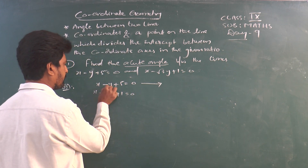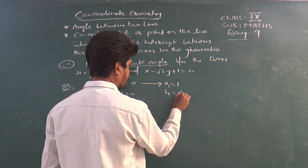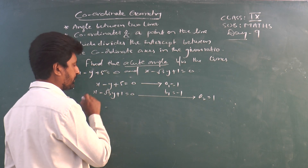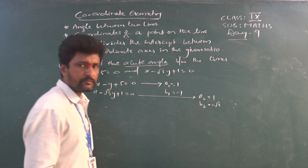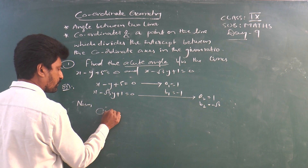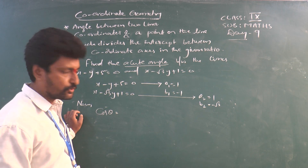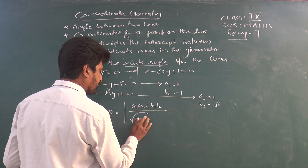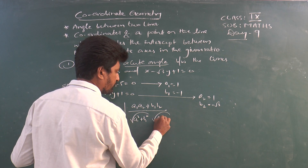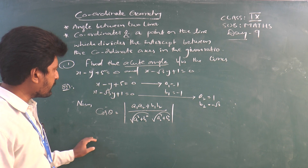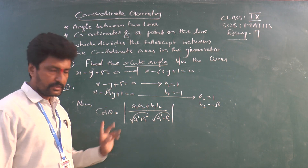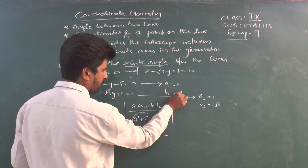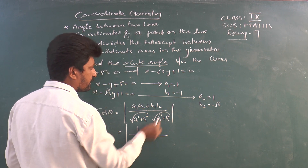From the second line x − √3·y + 1 = 0, the coefficients are a2 = 1 and b2 = −√3. Since we want the acute angle, cos θ = |a1·a2 + b1·b2| / (√(a1² + b1²) · √(a2² + b2²)). Substituting: the numerator is |1·1 + (−1)·(−√3)| = |1 + √3|. The denominator is √(1 + 1) · √(1 + 3) = √2 · √4 = √2 · 2, so cos θ = (√3 + 1) / (2√2).